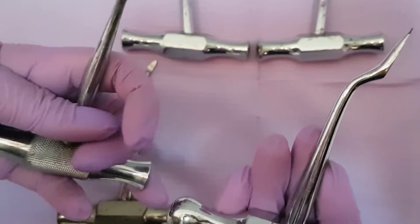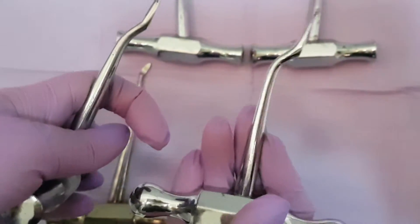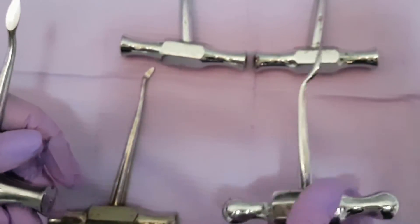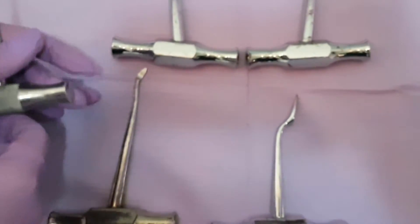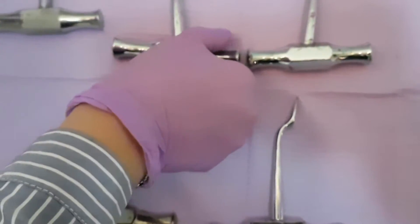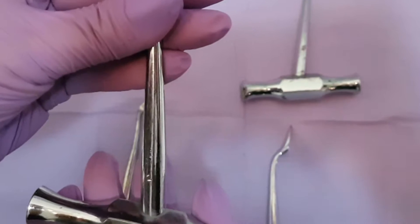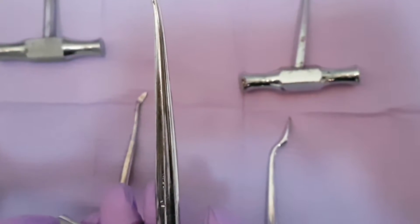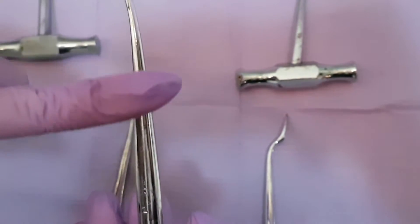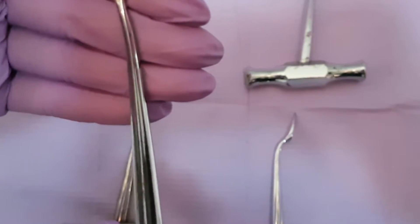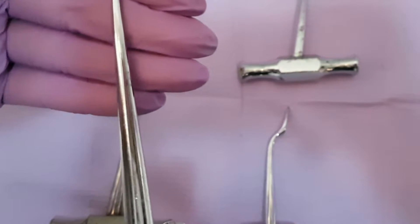Next, we will talk about the elevator that is called a berry elevator. It is also T-positioned, and we will know it by the fact that this elevator's blade exactly looks like the crier straight dental elevator.